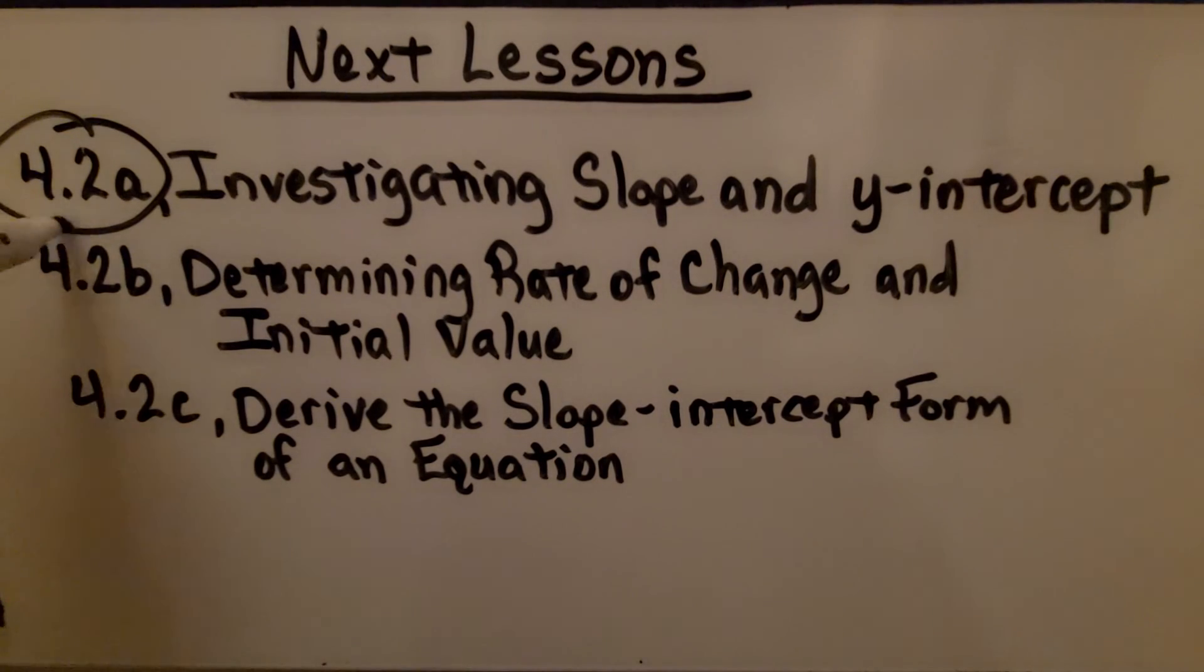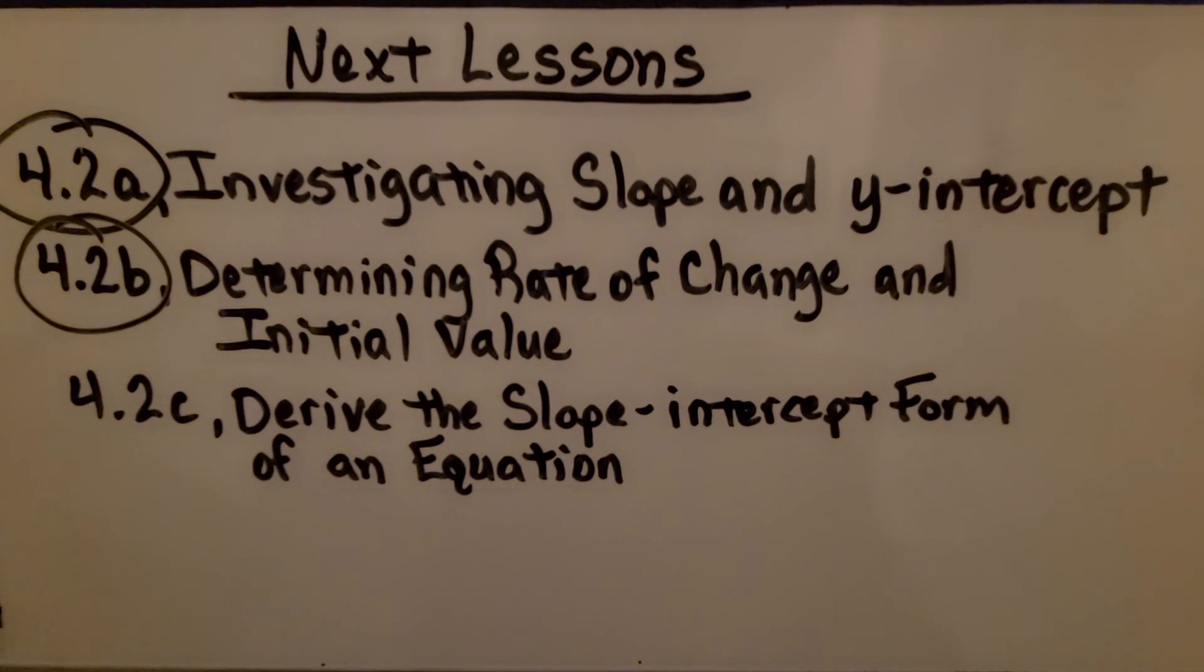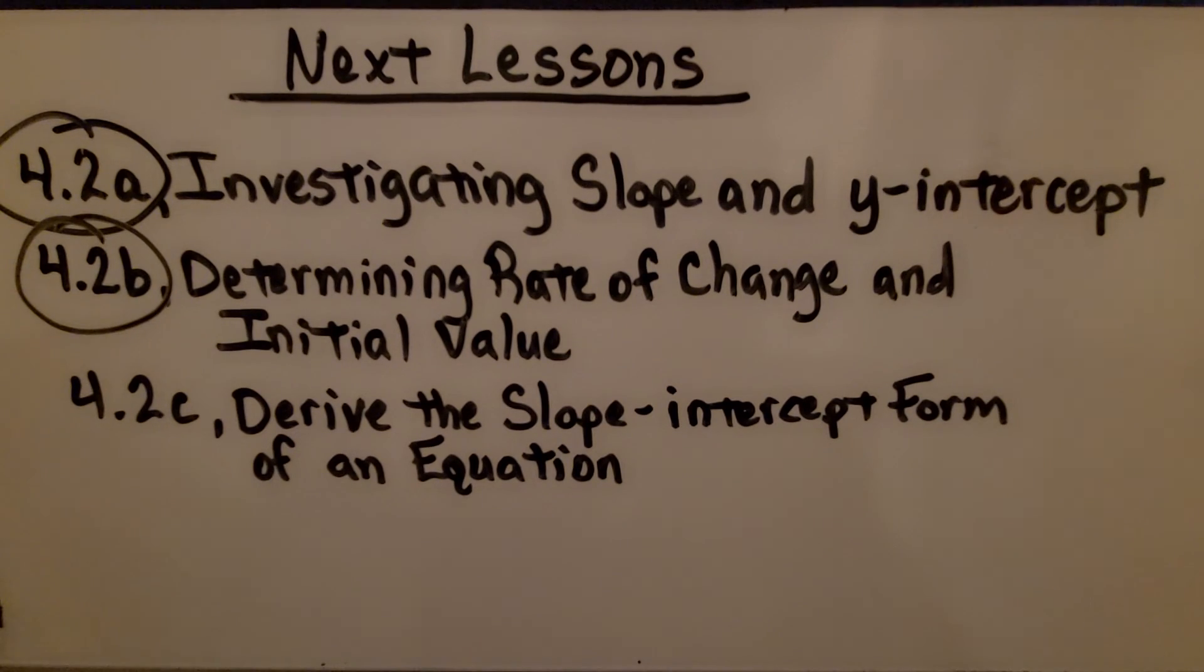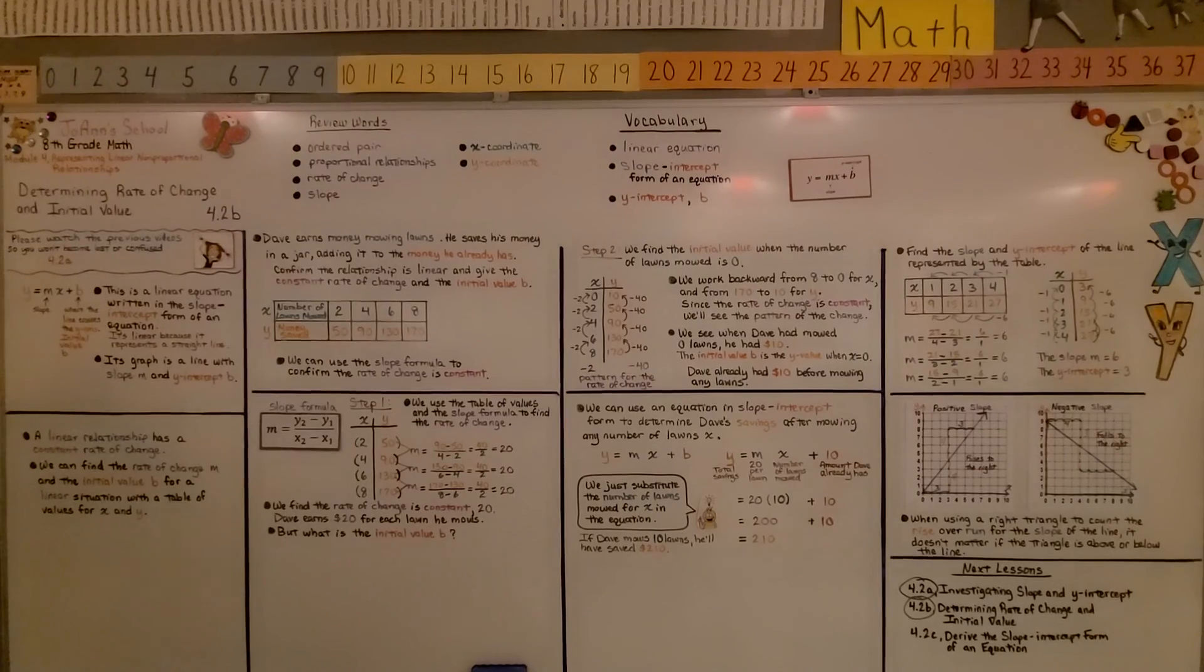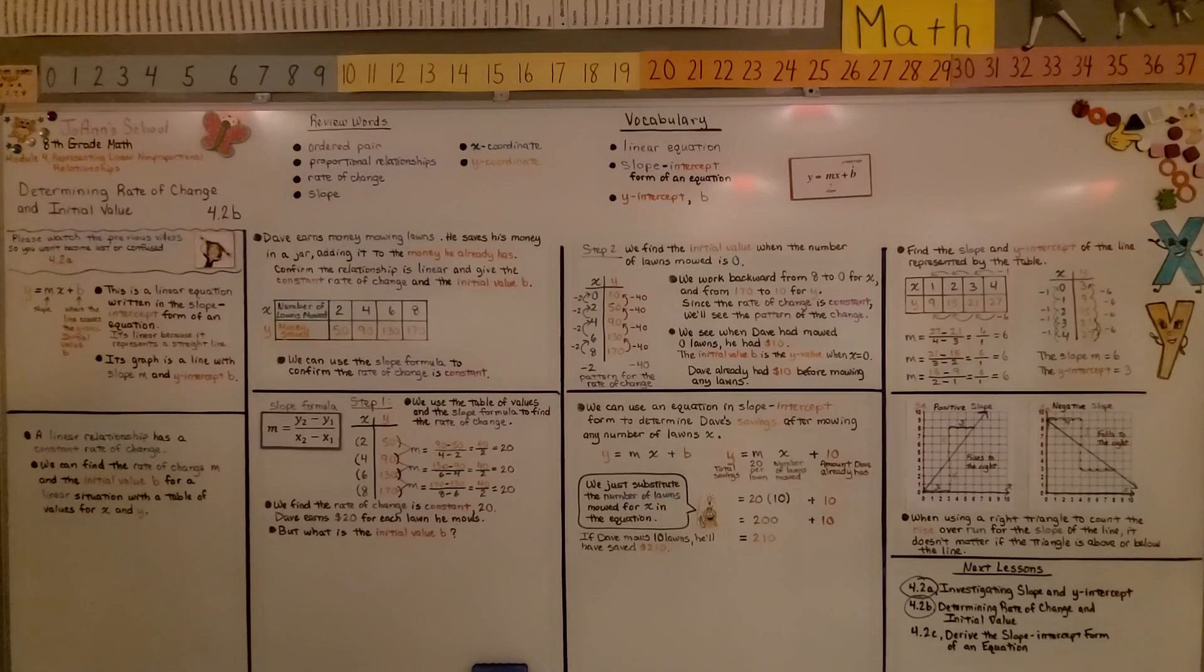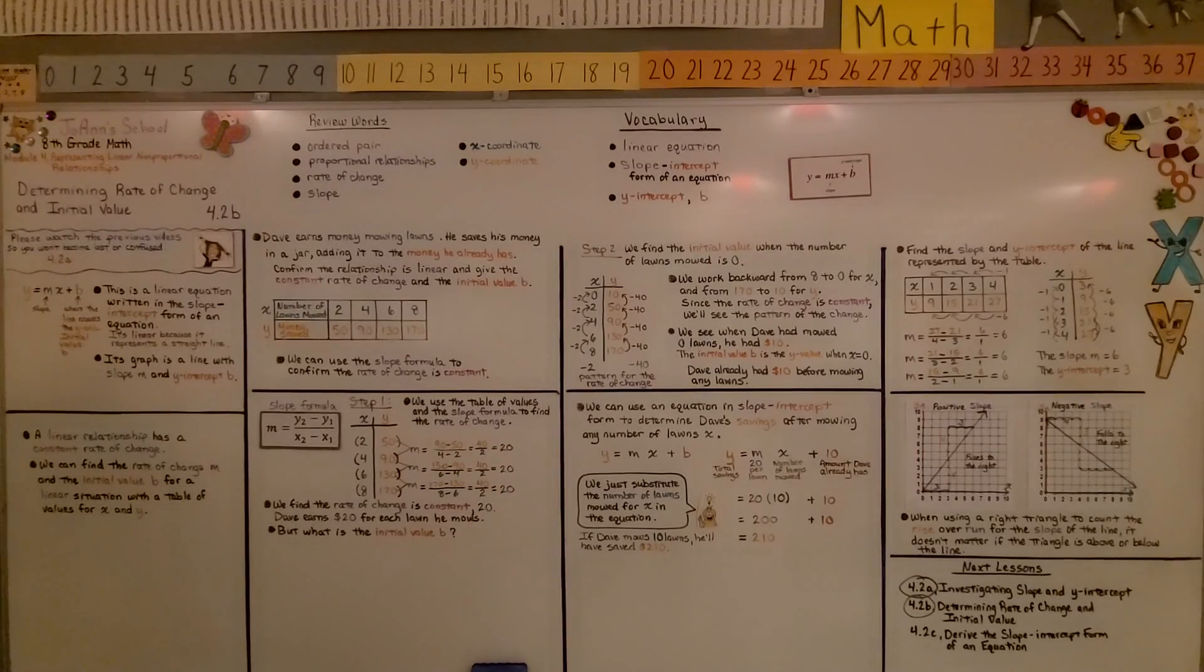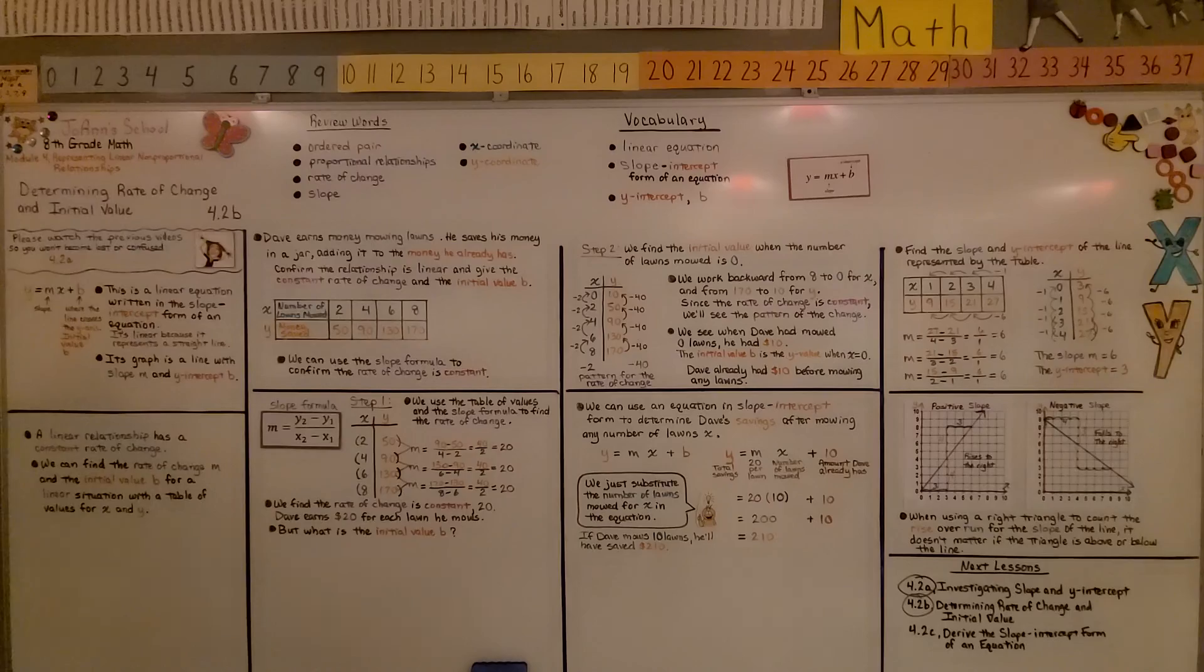Okay, we're finished with part b. We're going to move on to the last part. Derive the slope-intercept form of an equation. And remember, the y-intercept b is the y-value when x equals 0. I hope you have a great day and join me for the last part of the lesson. Bye!